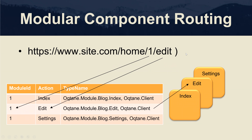Now we'll shift gears into modular component routing, because this is where it touches on the software development aspects of building modules. We're going to start with the same base URL, www.site.com/home, which is our page route, and we'll notice that there are a few extra segments that are part of the URL in this case.